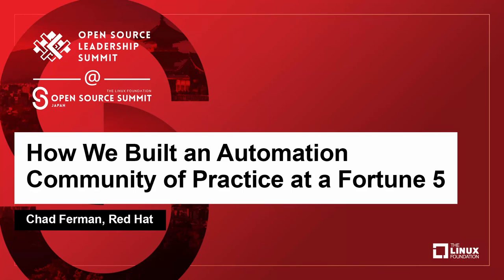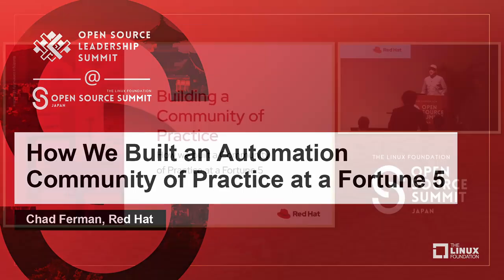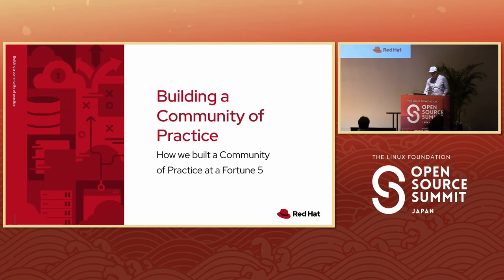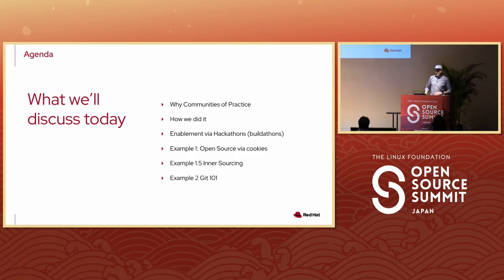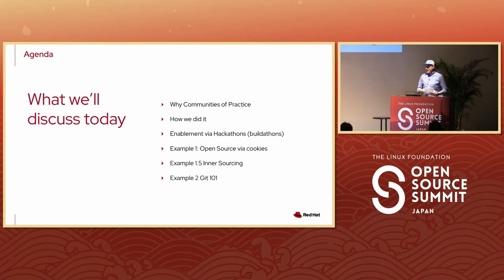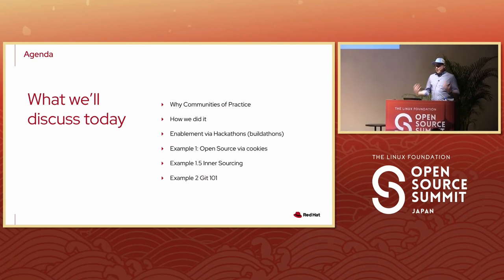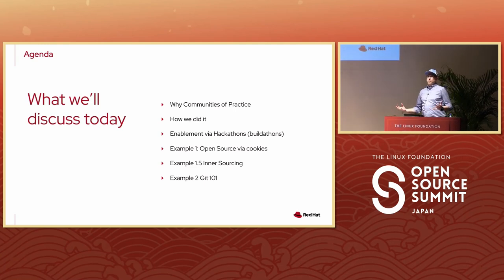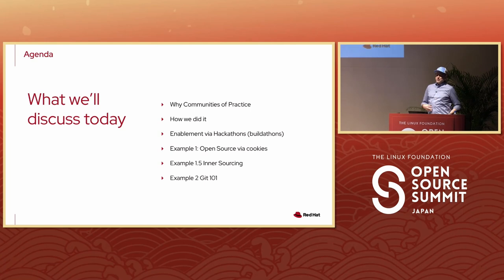Thanks for coming right after lunch. I'll try and speak slowly because I speak Japanese, so I know how hard it is to understand someone speaking in a different language. So let me know if I go too fast. My name is Chad Furman. I'm the Ansible Senior Principal Product Manager at Red Hat, but before I came to Red Hat, I was actually a customer for a very long time. What I'm going to talk to you about today is building a community of practice, why you build one, and getting people engaged in open source.